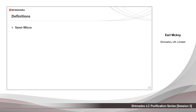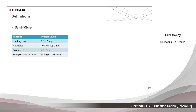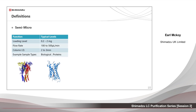Semi-micro: these systems have typical loadings of less than 2mg on column. Flow rates vary from 100 to 500 microliters per minute, and column internal diameters vary from 2 to 3mm. Samples are typically biological proteins in the examples shown.